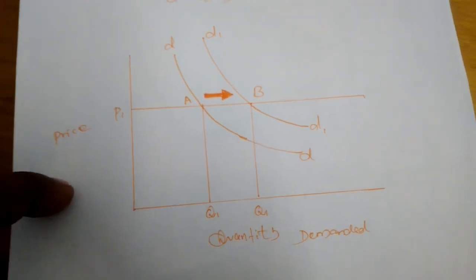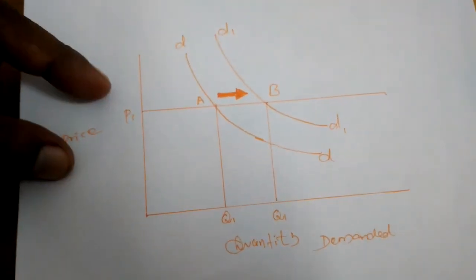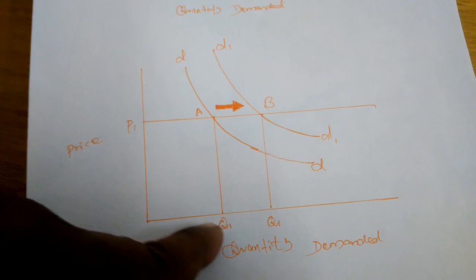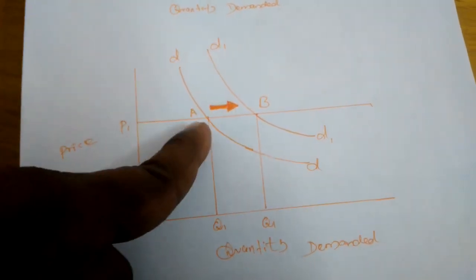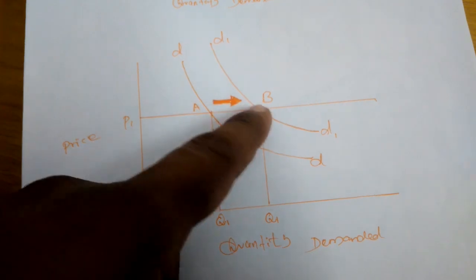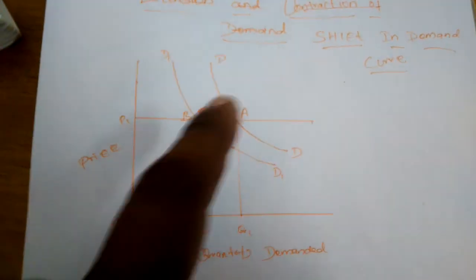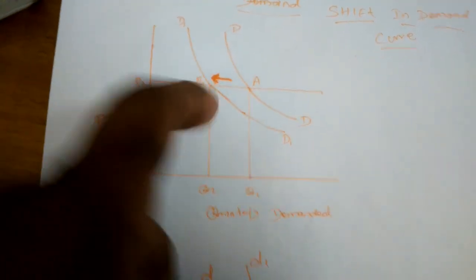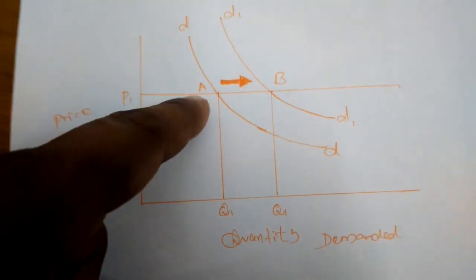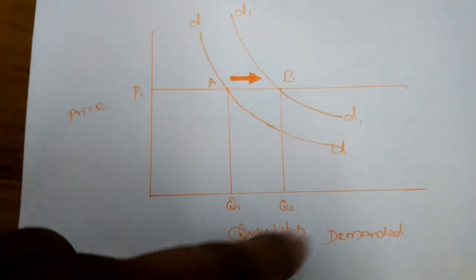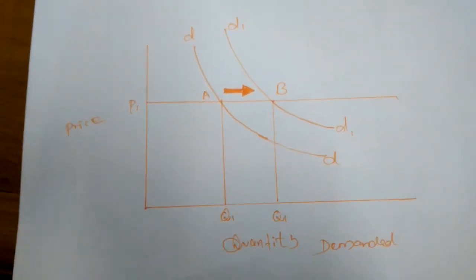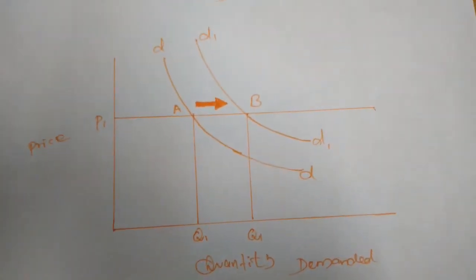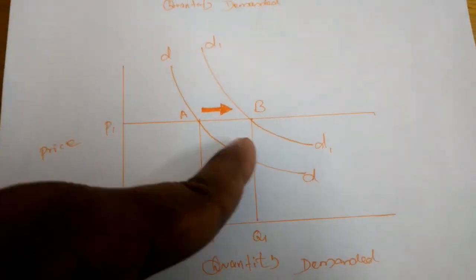When the price remains the same and the quantity demanded increases from OQ1 to OQ2, the demand curve shifts — meaning it increases from point A to point P. The demand curve totally increases because consumer income may have increased, taste and preference of consumers may have changed, or advertising may have induced consumers to consume more commodities.